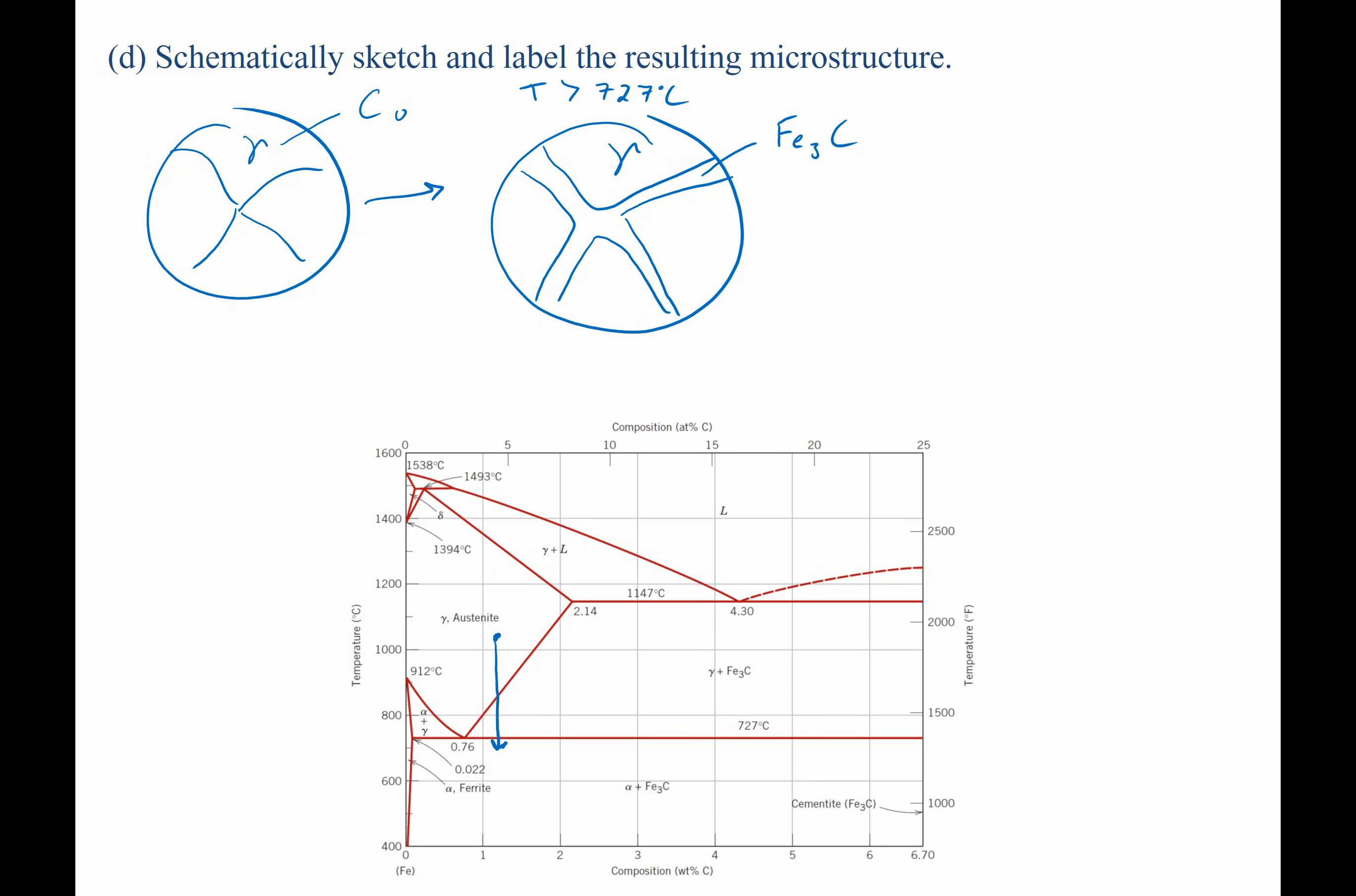Now why does the Fe3C form along those grain boundaries? Well, because every new surface that you form has a surface energy associated with it. So if it's going to have to form a new phase, it's going to form it where an old surface used to be to minimize new surface area.